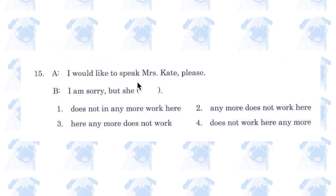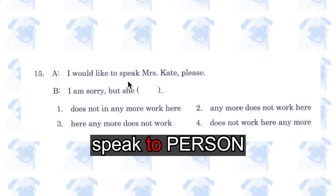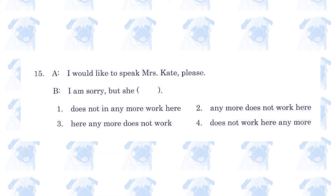Number 15. 'I would like to speak to Mrs. Kate.' This is not right — I would have said 'I would like to speak to Mrs. Kate'. I don't think the name Kate is a surname. But anyway: 'I am sorry, but she does not work here anymore / anymore does not work here / here anymore does not work / does not work here anymore.' Number 4. Usually the adverb 'here' comes after the verb, and the phrase 'anymore' usually comes towards the end of a sentence. I must say this exam is very sloppy.